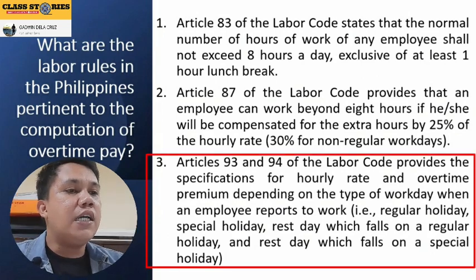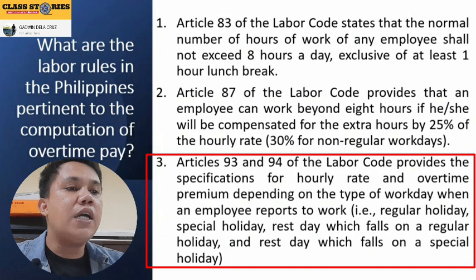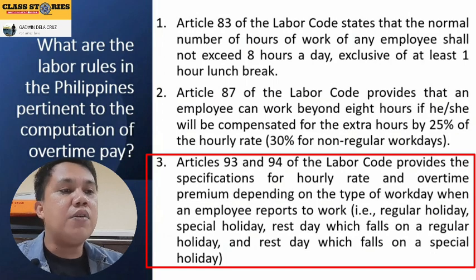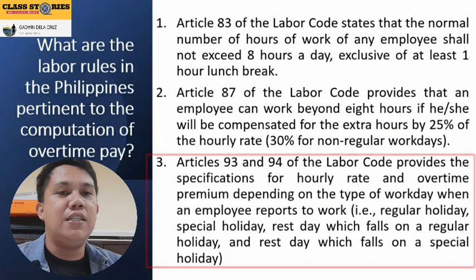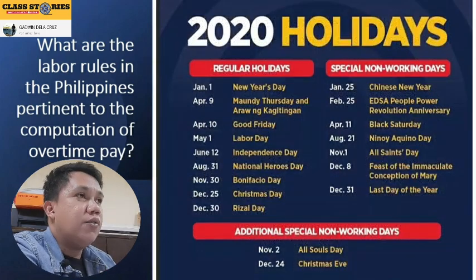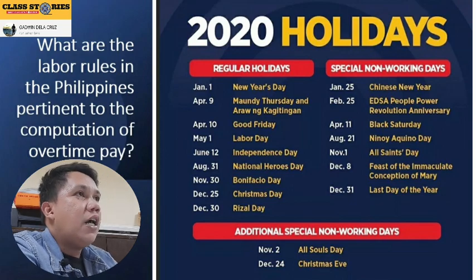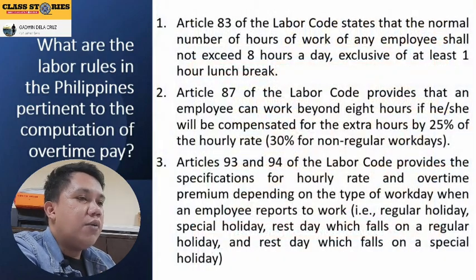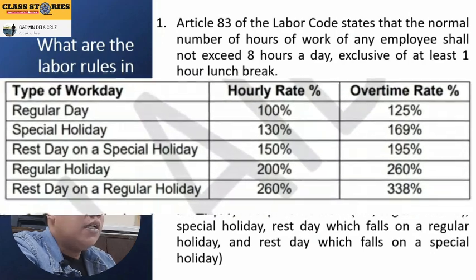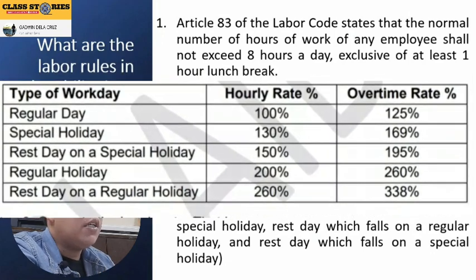Number three, Articles 93 and 94 of the Labor Code provide the specification of hourly rate and overtime premium depending on the type of working day when an employee reports to work — for example, regular holiday, special holiday, rest day which falls on a regular holiday, and rest day which falls on a special holiday. The rates vary, and later I will give you the table about the rates for regular holidays and special non-working holidays.